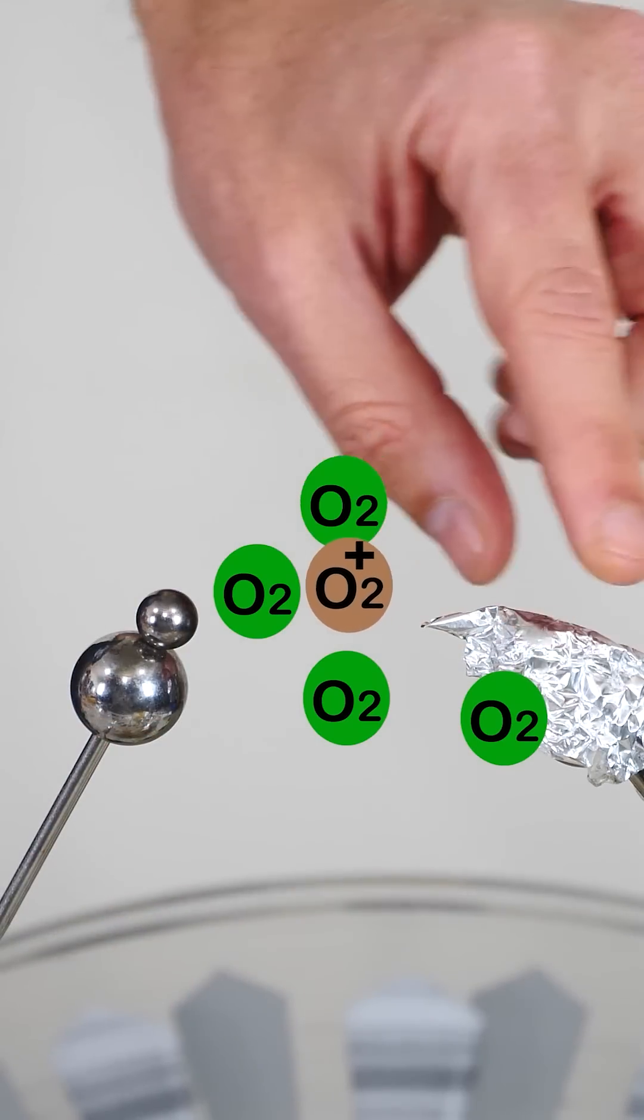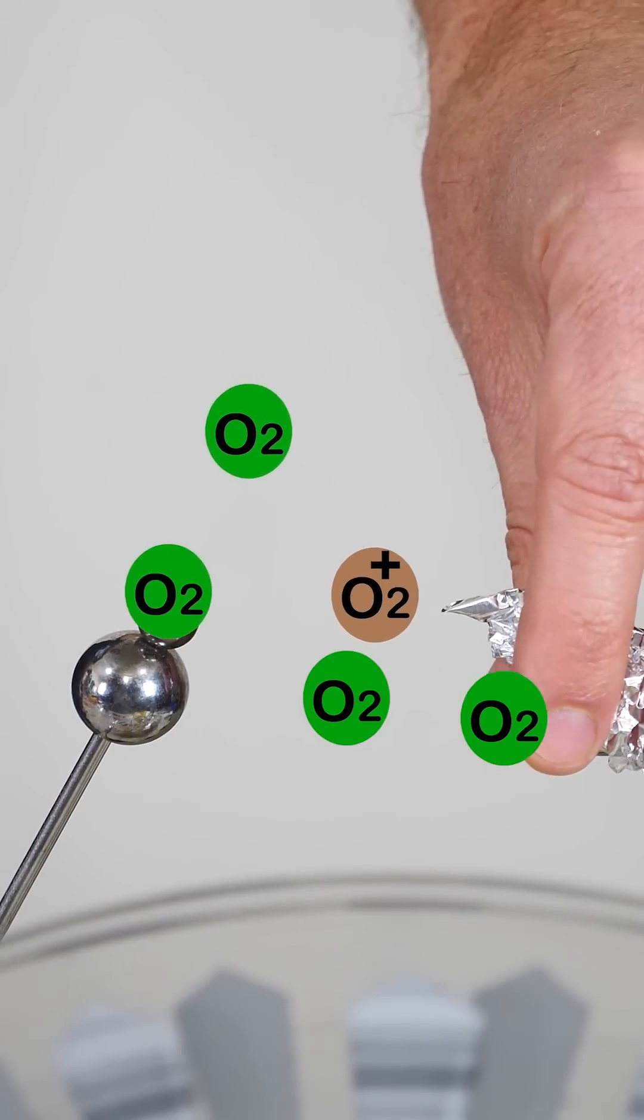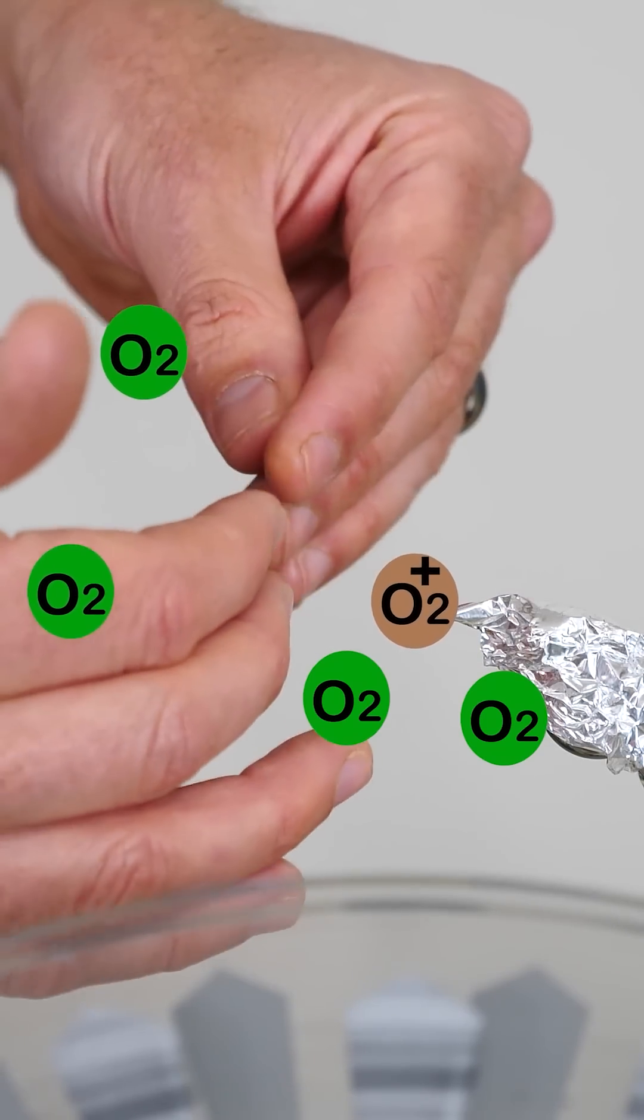If you have a pointy electrode in high voltage, you can actually generate ionic thrust, so you generate a wind that moves away from the electrode.